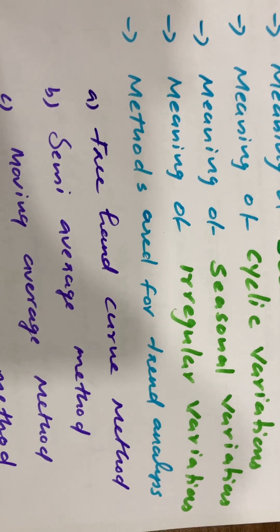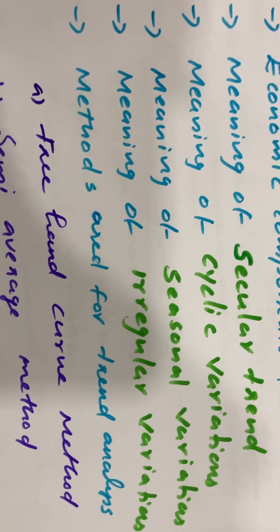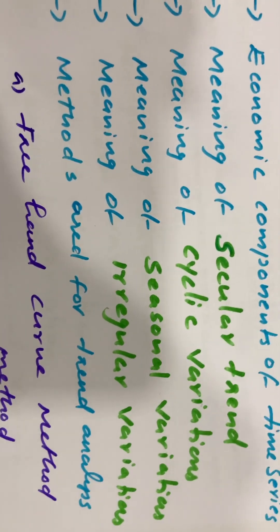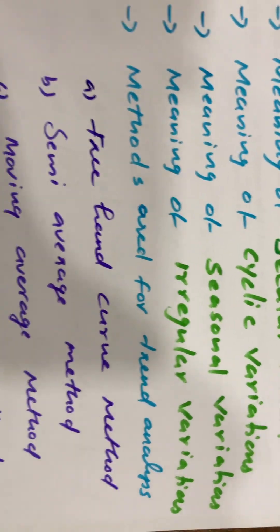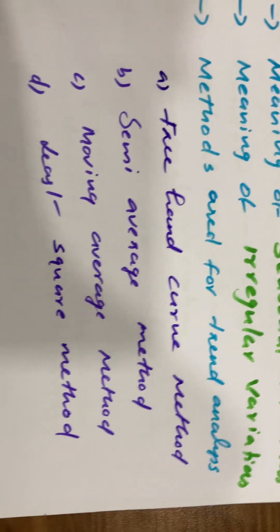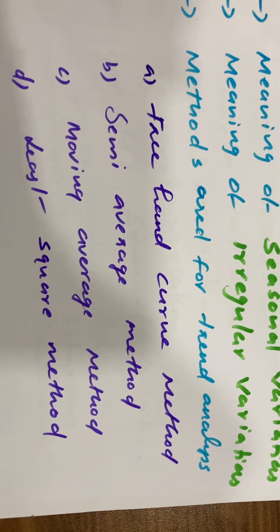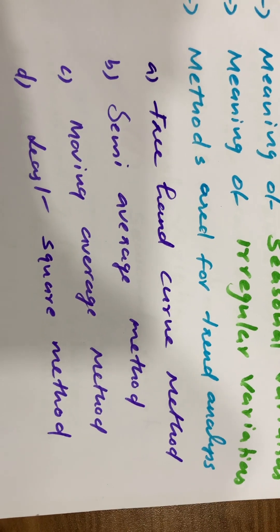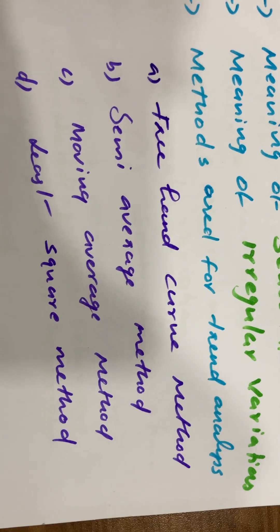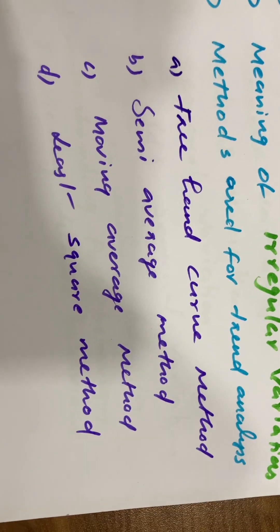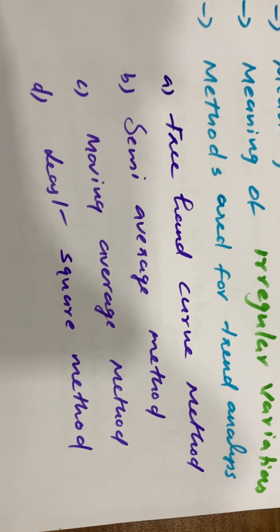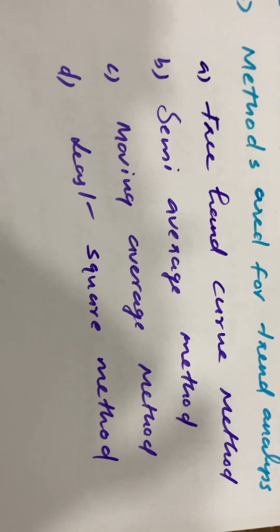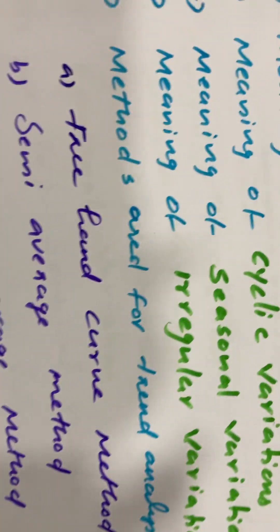We will learn how to use methods for determining trend in the time series, such as the freehand curve method, semi-average method, moving average method, and least square method. We will learn how to use these methods in this chapter.